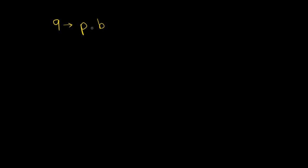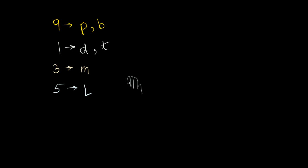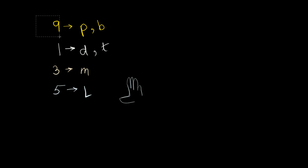Let me tell you what number 9 is associated with — pause and think. It's P or B, right? They have essentially the same strokes. What is number 1 associated with? That's D or T. What is number 3 associated with? 3 is associated with M. And the last one for today: what is number 5 associated with? The number 5 is associated with L — we made this L shape. If you got all of these correctly, then you are ready for the next section of the video.